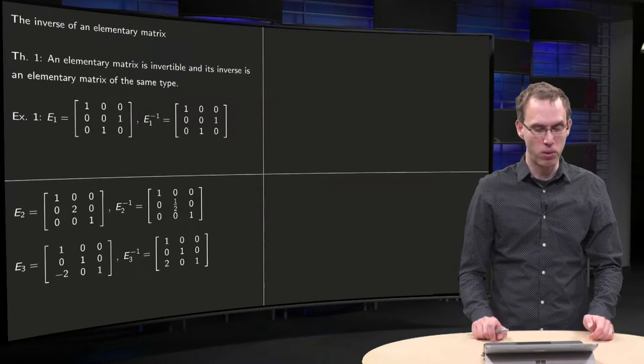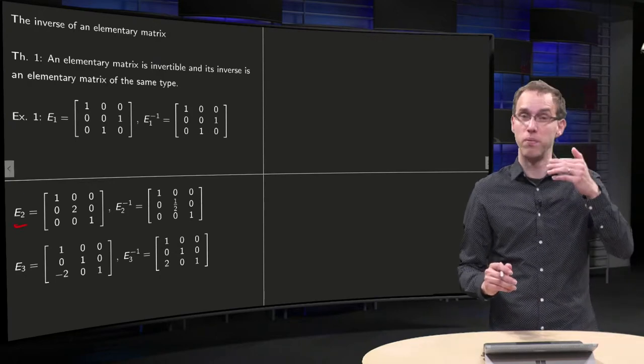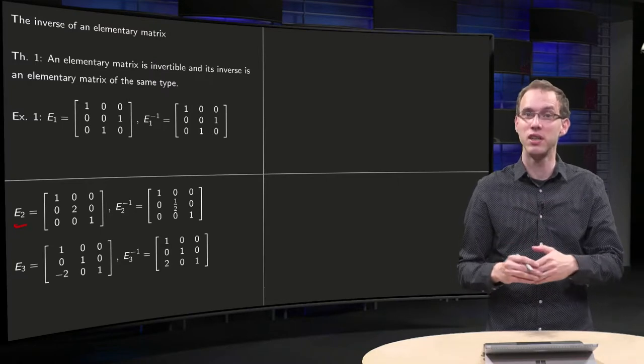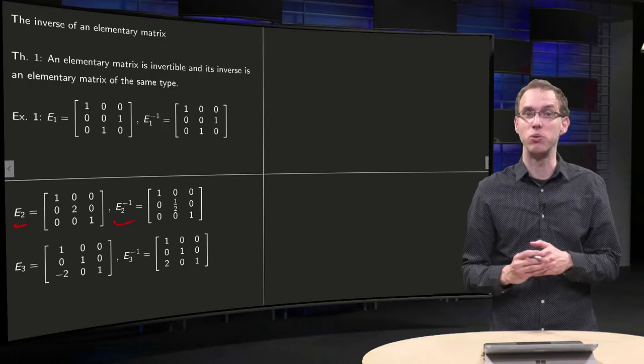Something similar holds for E2. So what does E2 do? It multiplies a row by a factor of two. How do you undo that operation? Well, by multiplying the same row by a factor of one half, and that's how you get E2 inverse.